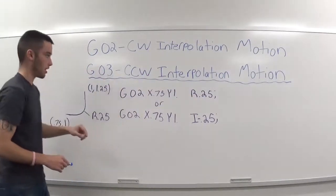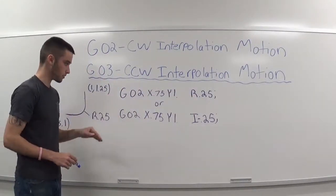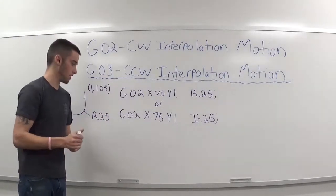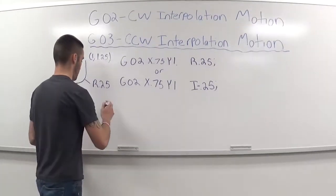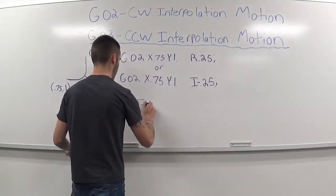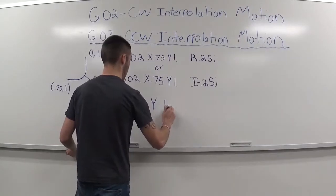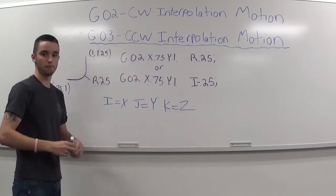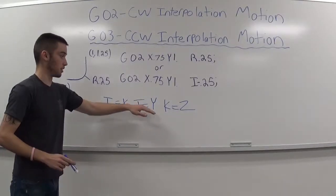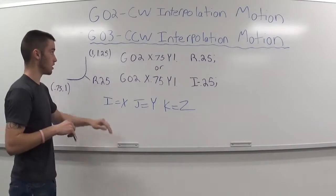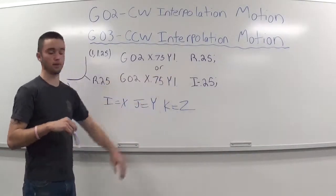That's one way you can do a G02. The other way is the IJK method. I represents x, J represents y, and K represents z. With the IJK method, you can actually do circles with a G02 and a G03. If you do the R method right here, you can't do a full circle.